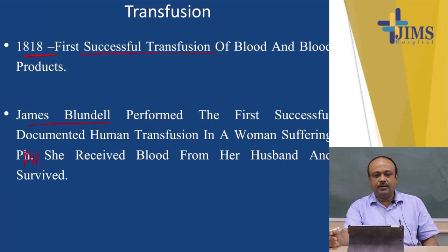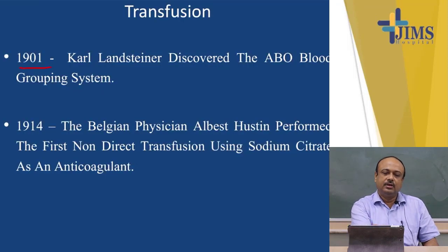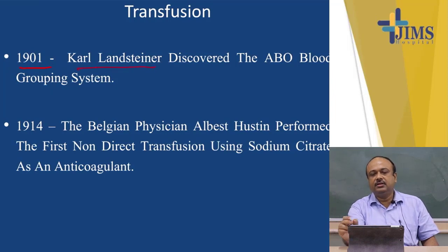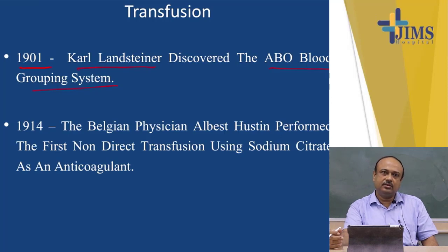The important part was that the blood grouping system came much later. It was done by Karl Landsteiner in the year 1901. Karl Landsteiner discovered the ABO blood grouping system, which is the most important blood grouping system. Others are the rhesus blood grouping system depending on the antigen present on the RBCs. Other rare blood groups are Duffy, Kell, and Bombay blood group.